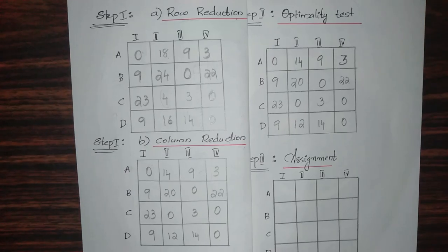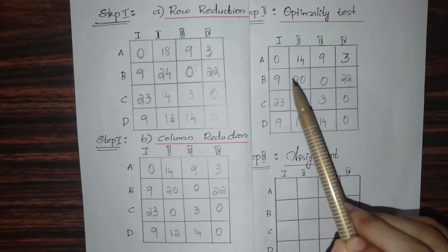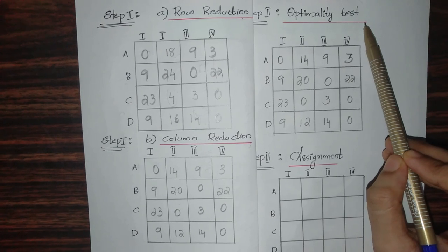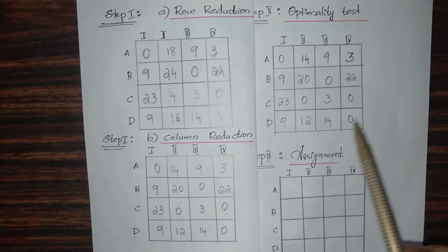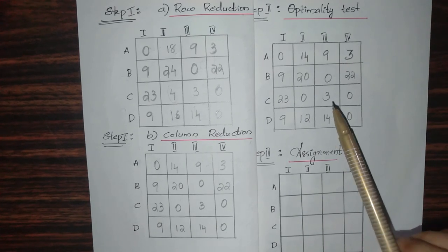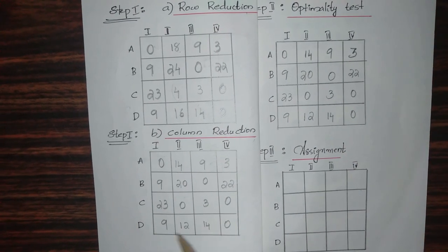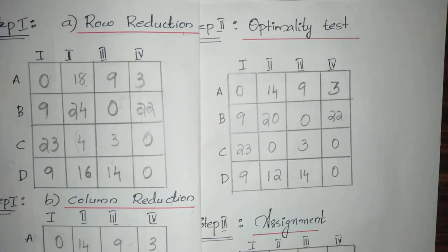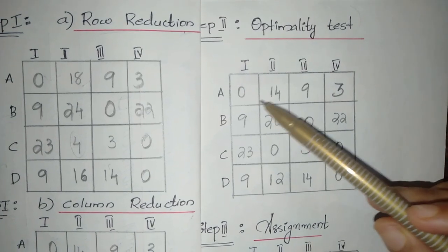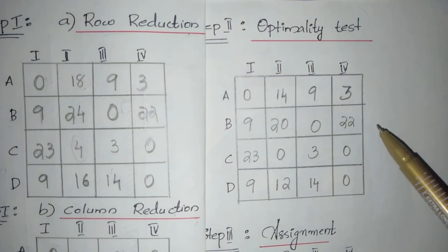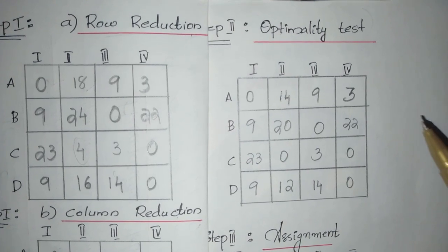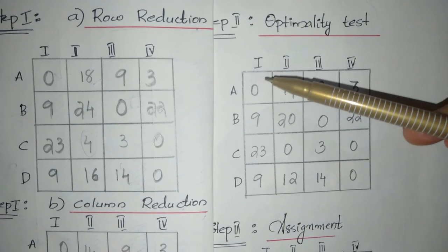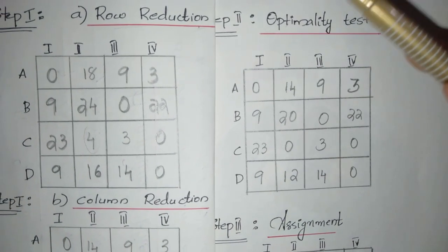Next is Step 2: the optimality test. In the optimality test there are two types of scanning — row scanning and column scanning. In row scanning, starting with the first row, ask: is there exactly one zero in that row? If yes, put a tick mark on that zero entry and draw a vertical line passing through that zero. Otherwise, skip that row.